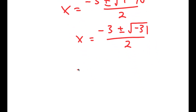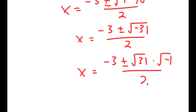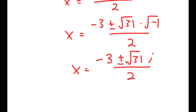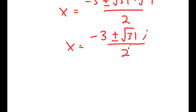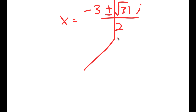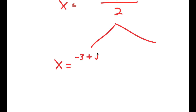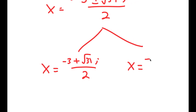The square root of negative 31 is the same thing as the square root of 31 times the square root of negative 1. And the square root of negative 1 is equal to the imaginary number i. So I get negative 3 plus or minus the square root of 31 times i, all over 2. This is actually two solutions: x is equal to negative 3 plus the square root of 31 i over 2, and x is equal to negative 3 minus the square root of 31 i over 2.